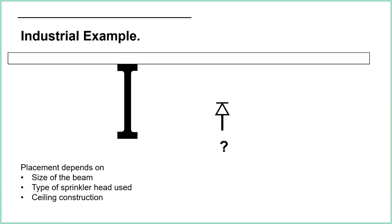What about a more industrial example? A common obstruction we come across is beams — where we don't have a flat ceiling. Sloped ceilings don't tend to cause too many issues because you design it as if it were flat and adjust the pipe length to compensate for the slope. But beams and supports — whether exposed structural beams, plasterboard-enclosed, or concrete — where the ceiling isn't flat, can cause an obstruction.